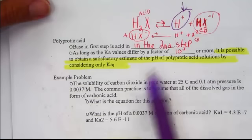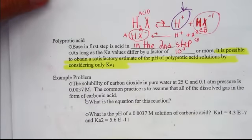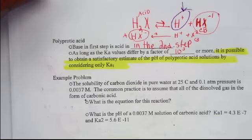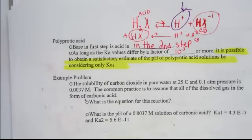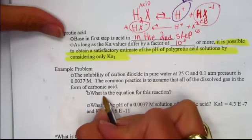The solubility of carbon dioxide in pure water at 25 degrees Celsius and 0.1 atmosphere pressure is 0.0037 M. The common practice is to assume all of the dissolved gas is in the form of carbonic acid. What would the chemical equation for this reaction be? Dissolving carbon dioxide